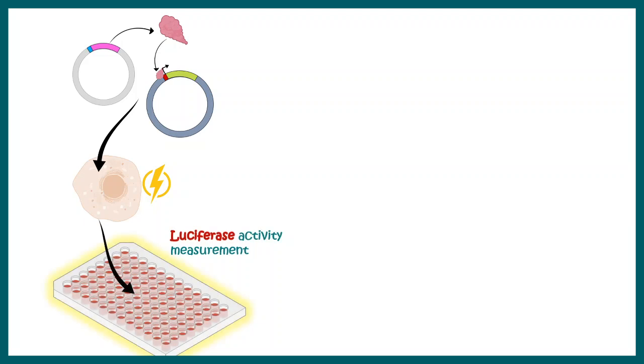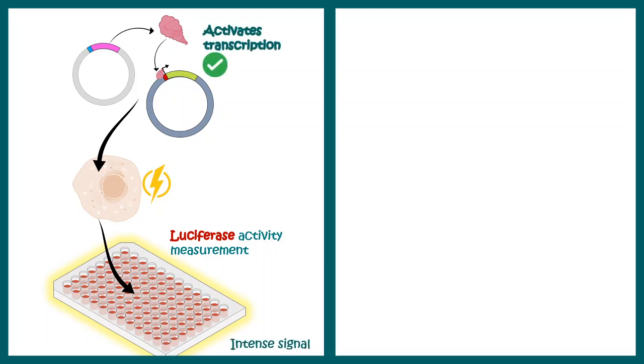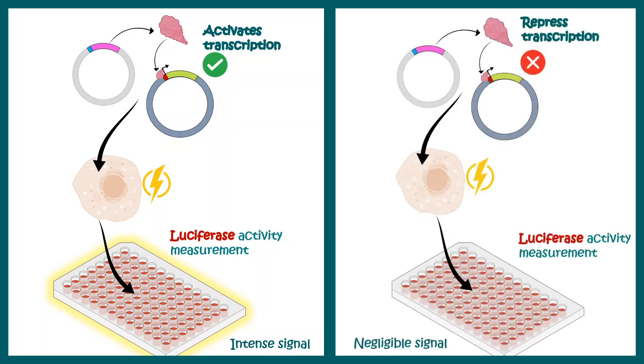We can also use luciferase reporter assay to understand whether a particular protein of interest is repressing or activating transcription. Here, a particular protein is possibly activating transcription. We co-transfect the cells with an expression vector containing the protein and a luciferase reporter construct. If we see a lot of luciferase reporter activity, that means this particular protein is a transcriptional activator. In contrast, if after transfection we see negligible luciferase activity, that means the particular protein is a repressor of transcription.